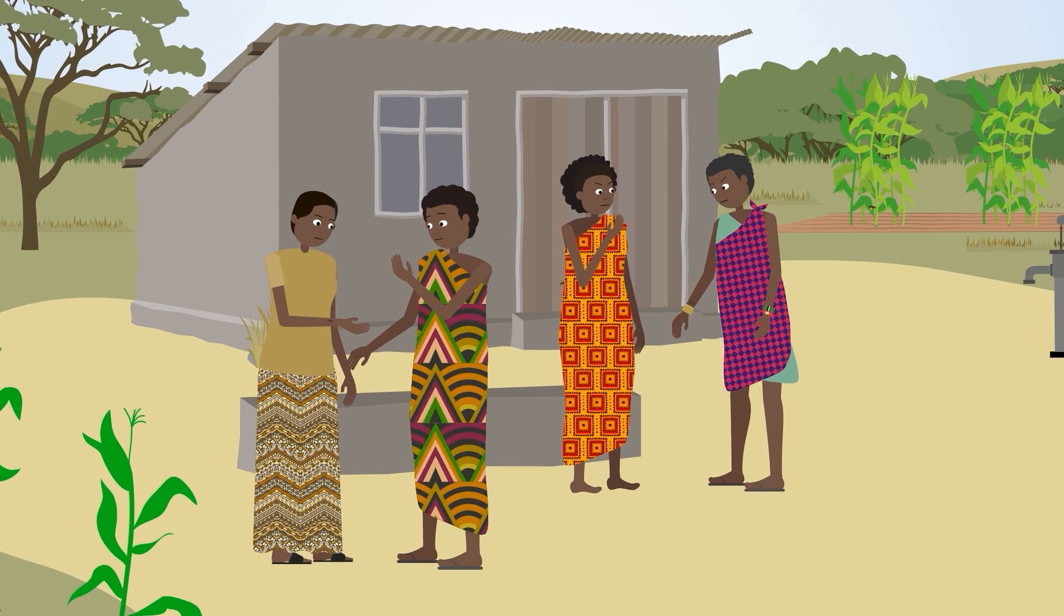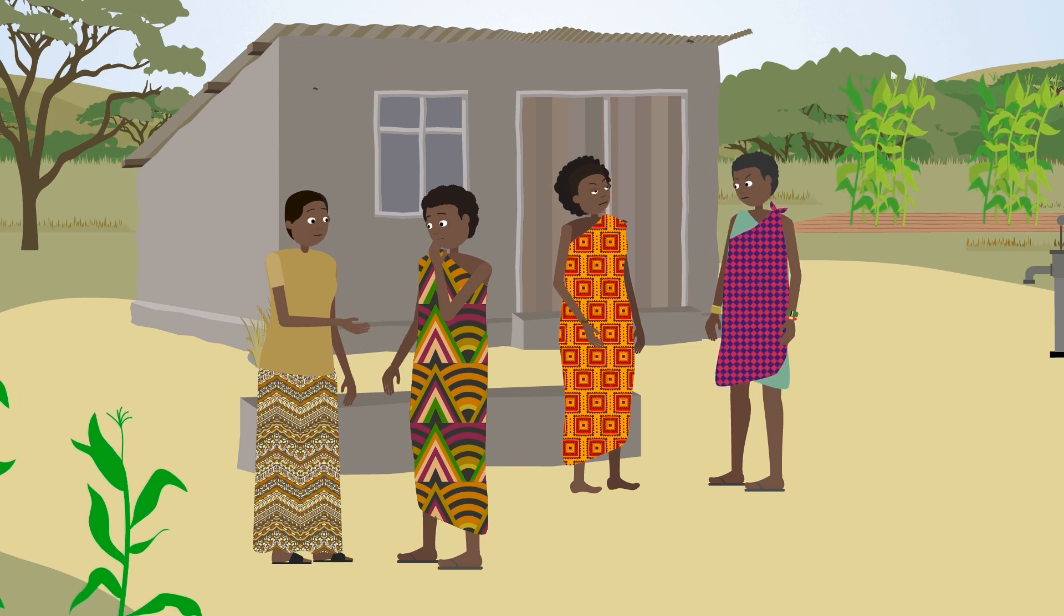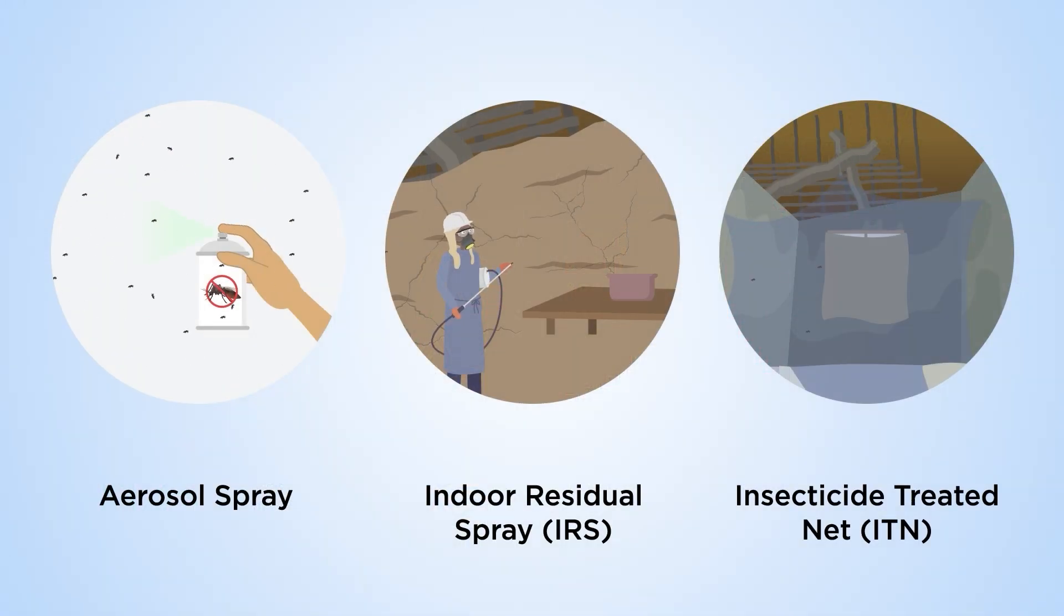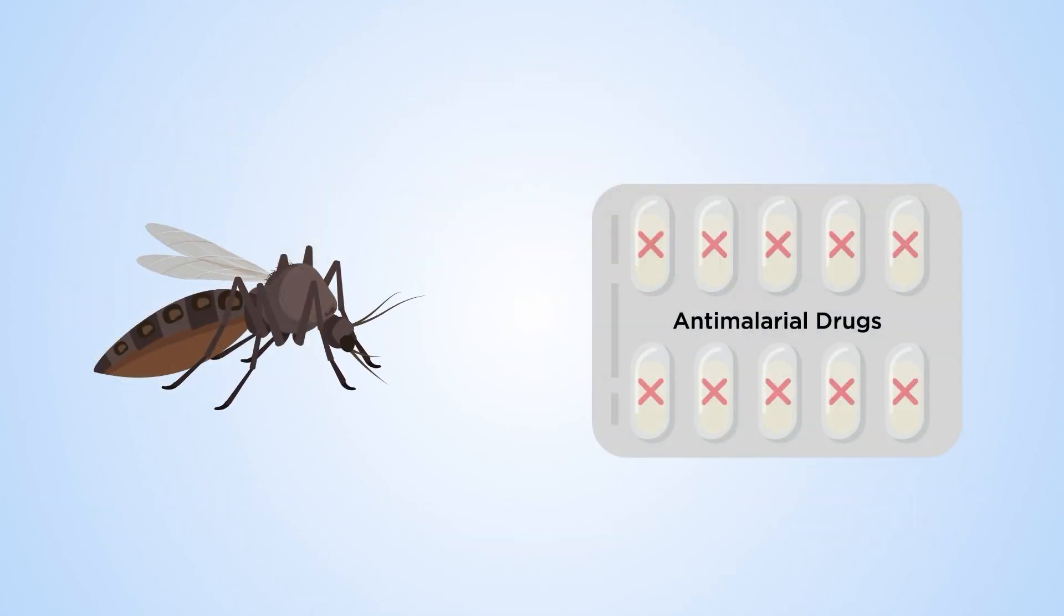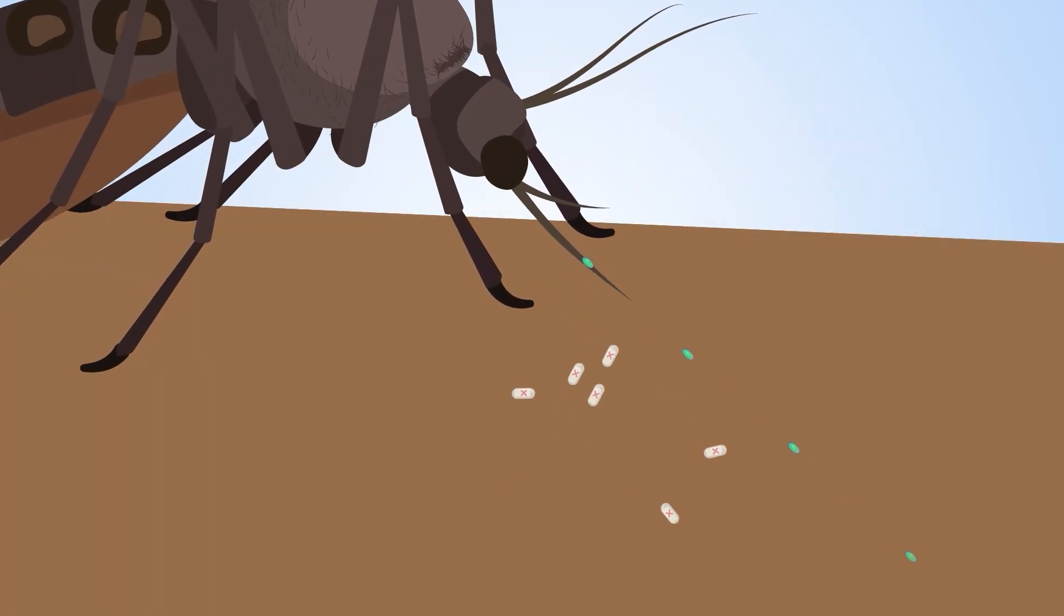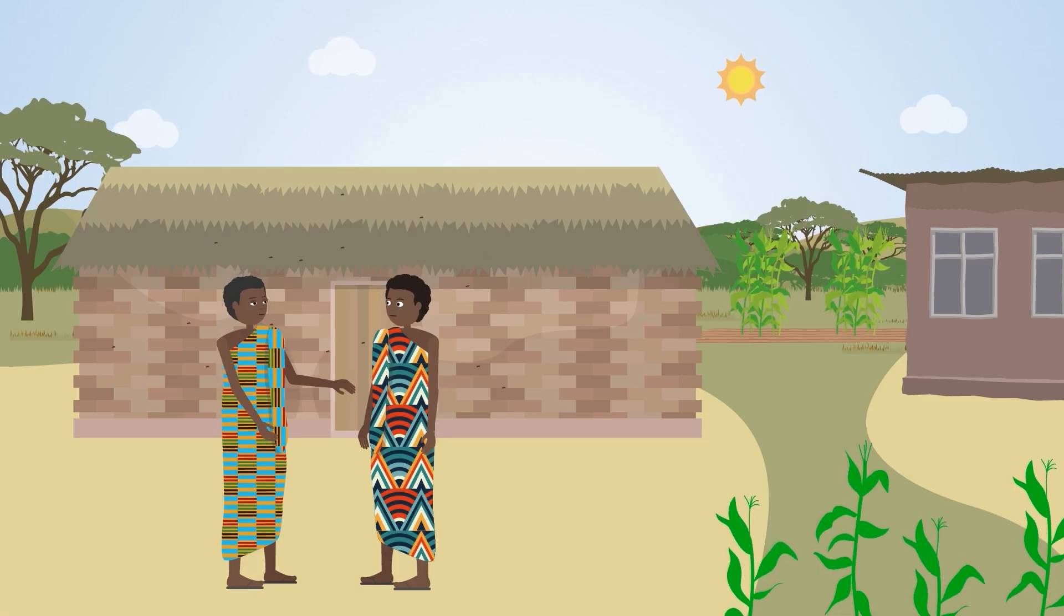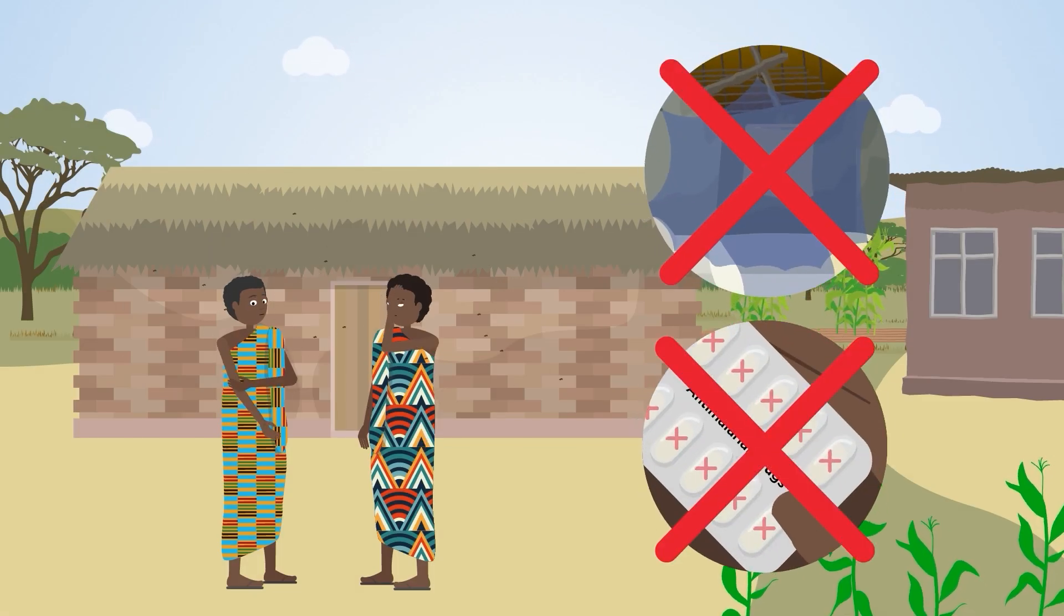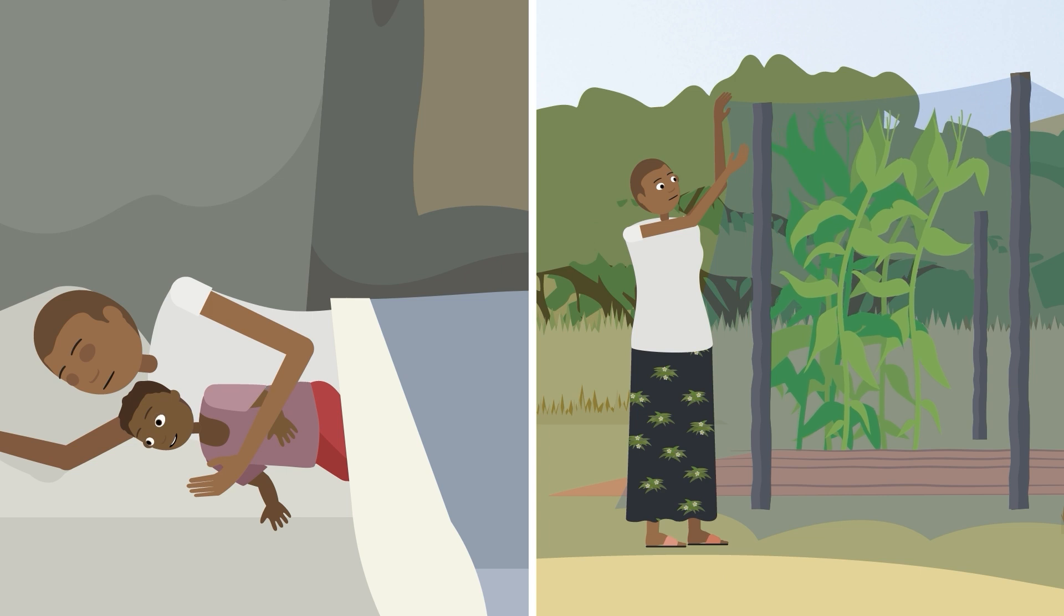Such as behavioral resistance in mosquitoes, insecticide resistance, Plasmodium falciparum's resistance to antimalarial drugs, low coverage with essential vector control interventions, and non-compliance.